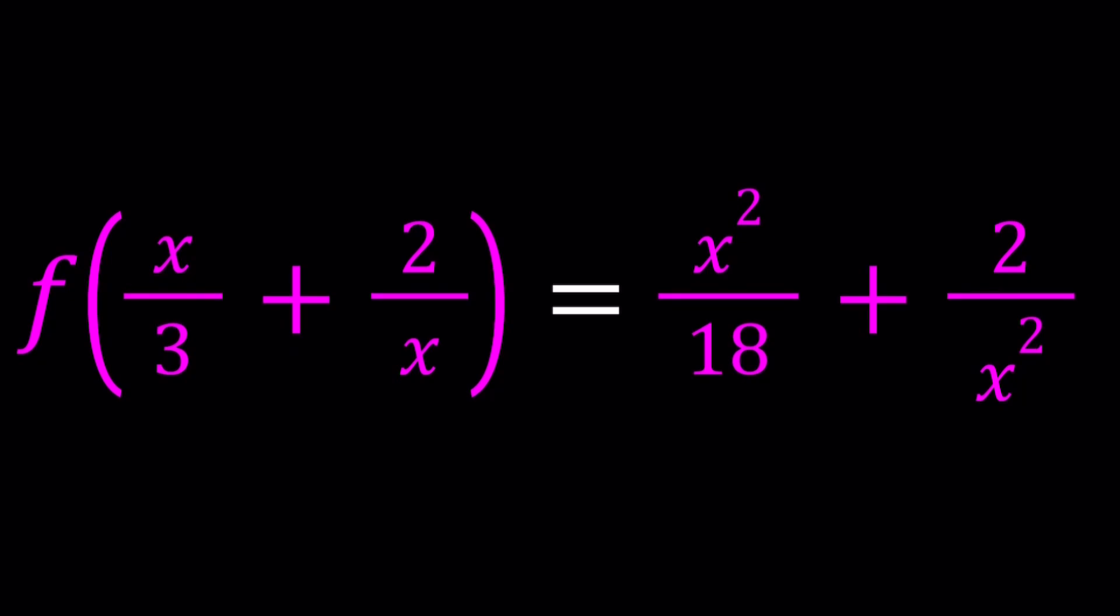Now, we have f of x over 3 plus 2 over x equals x squared divided by 18 plus 2 divided by x squared.